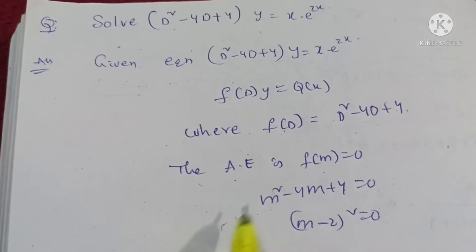Again, D replaced with m. m minus 2 whole square. Therefore, m is equal to 2, 2.